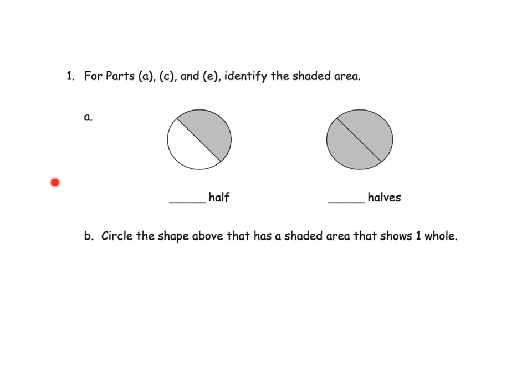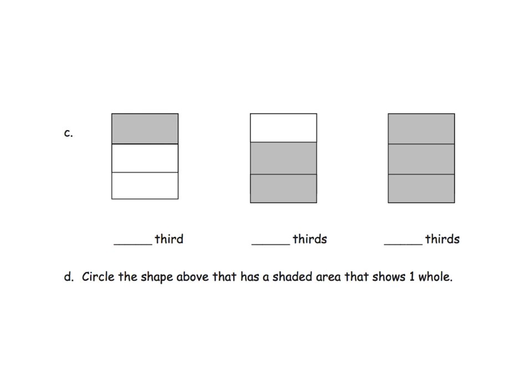So, we're going to start by saying, for parts A, C, and E, identify the shaded areas. So we're going to look at A, and what is shaded? Well, one-half is shaded. What's shaded over here? Well, that would be two-halves, but we don't say it with an F, we say it with a V-E-S, two-halves. And then, of course, circle the shape that has a shaded area that equals one whole. So which one of these shows one whole? It's this one.